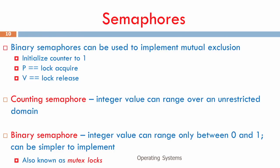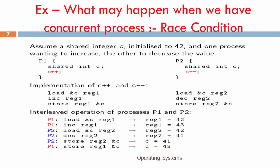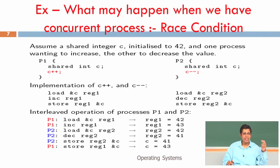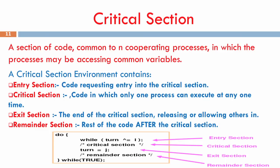There are also binary semaphores, where the integer value is in the range 0 and 1 — essentially a bit. Binary semaphores are also called mutual exclusion locks. A lock is either locked or unlocked, with no numeric value. A critical section has three parts: an entry section, the critical section itself, an exit section, and a remainder section — the remainder of all the code outside the critical section.